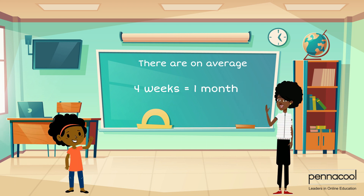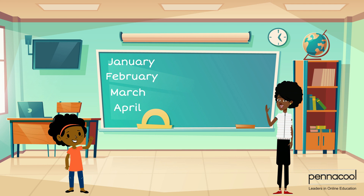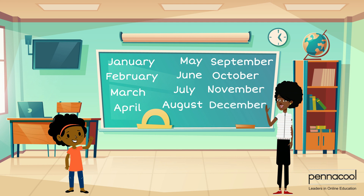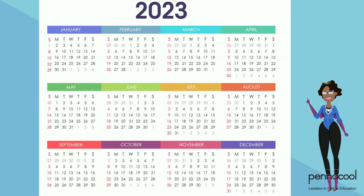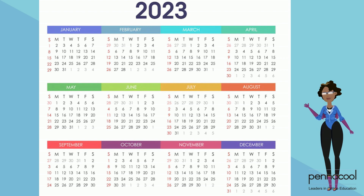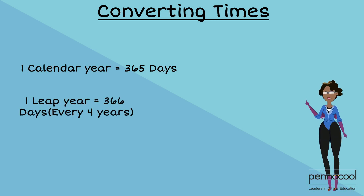Little Catalia asks her teacher: 'Miss, if there are on average four weeks in a month, how many months in a whole year?' Well, Catalia, one calendar year has 12 months in it: January, February, March, April, May, June, July, August, September, October, November, and December. Most months either have 30 or 31 days, with the exception of February, which only has 28 days and then 29 in each leap year, which only takes place every four years. A calendar year has 365 days, but an additional day in each leap year, which again only happens every four years.